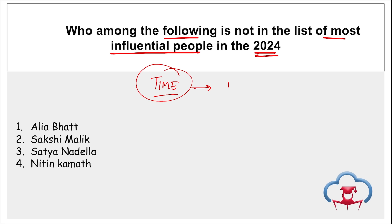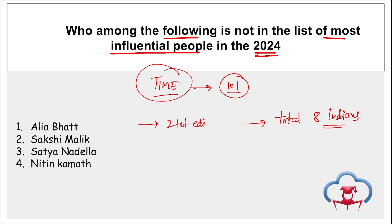Which of the following is not in the Time 100 Most Influential People 2024 list? Time, a 101-year-old global media brand, released the 21st edition of its annual Time 100 Most Influential People 2024 list, featuring a total of eight Indians. Nitin Kamath has not been listed. Alia Bhatt is a famous Bollywood actress who recently acquired British citizenship and won her first National Film Award for Best Actress in 2023 for Gangubai. Sakshi Malik is a famous Indian wrestler and the first Indian female wrestler to win an Olympic medal, but she retired in December 2023.